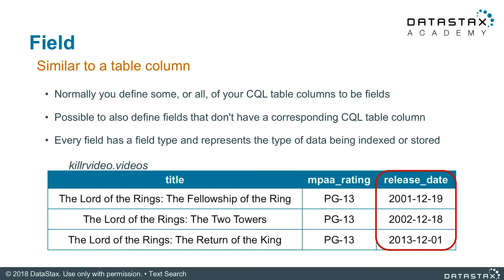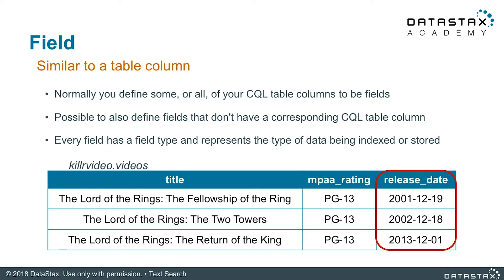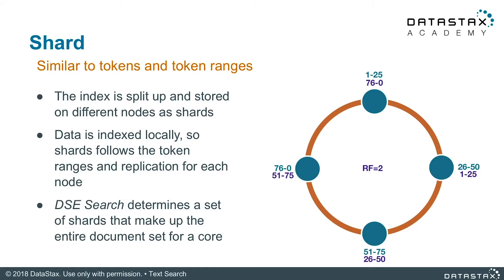It's actually possible to define fields in your search index that don't have a corresponding CQL table column. This is used to duplicate data in your index for a different kind of analysis while avoiding storing the raw data multiple times in your data store. Every field is going to have a type which represents the type of data being indexed and stored. A shard is synonymous with our token ranges — the index is split up and stored on different nodes as shards, directly correlating to your data store data.